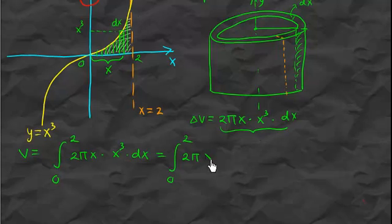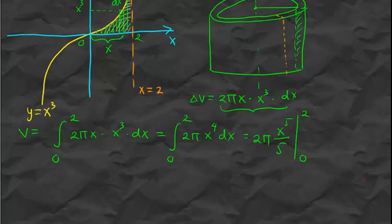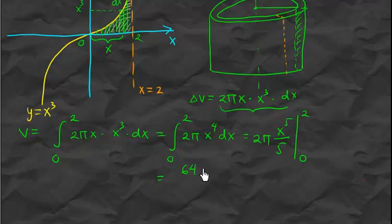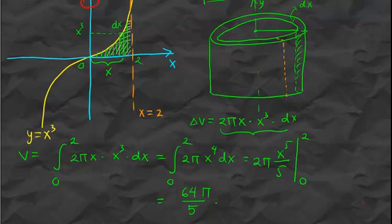We compute the integral from 0 to 2 of 2 pi x to the fourth dx. The antiderivative of x to the fourth is x to the fifth over 5, keeping the constant 2 pi in front. Plugging in x equals 2 and x equals 0, we get 64 pi over 5. That's the answer.